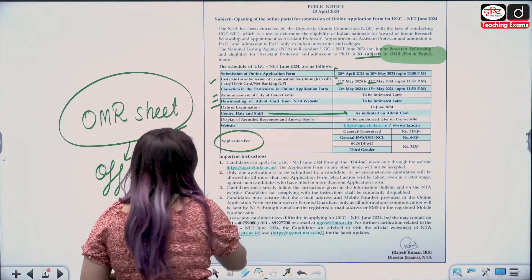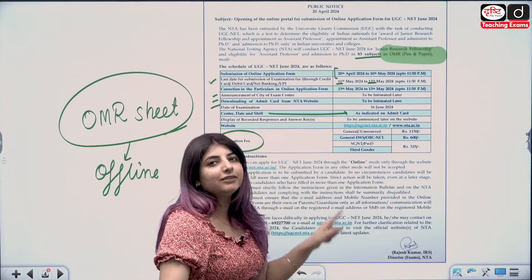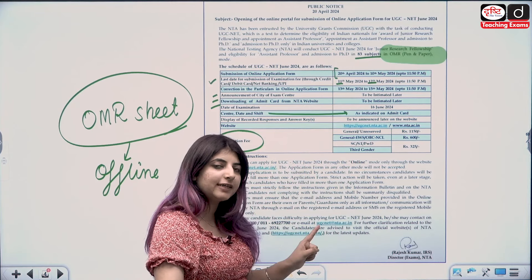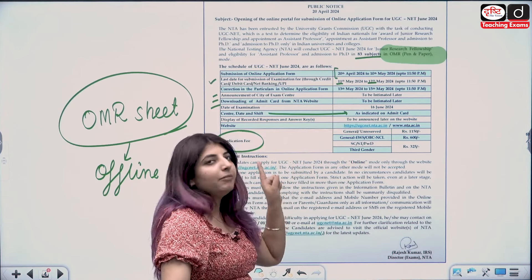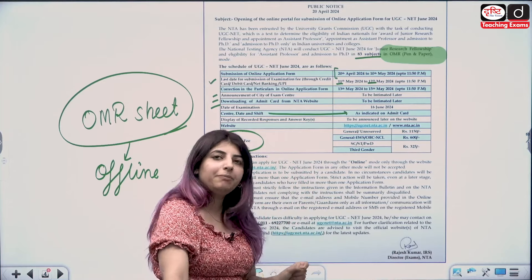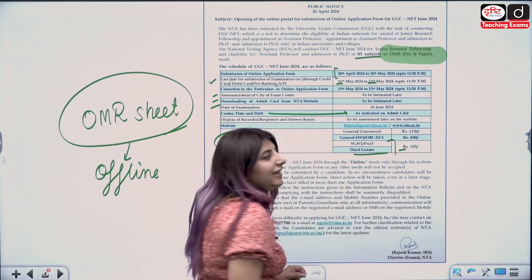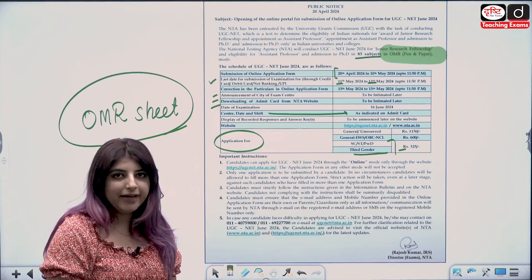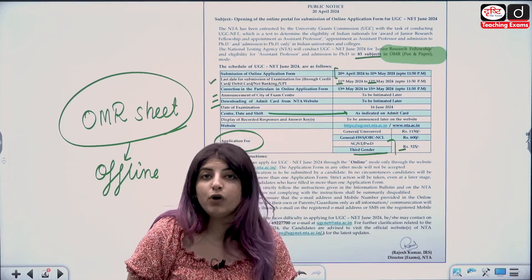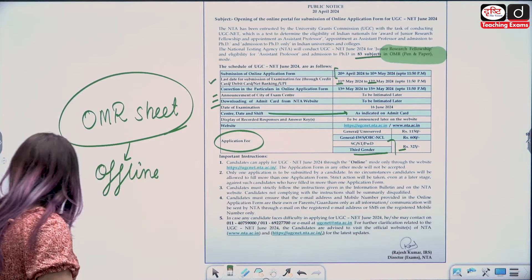If we talk about the application fee, for general unreserved category the fee is ₹1150. For General EWS and OBC NCL, it is ₹600. For SC, ST, and PWD candidates it is ₹325. The first change we noticed is in the mode of examination, which has been shifted from online to offline.